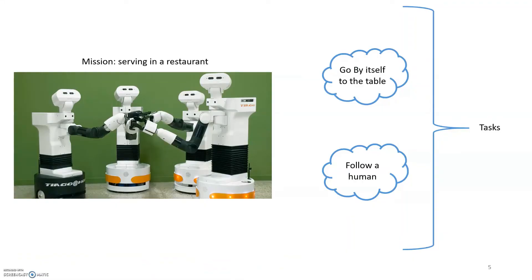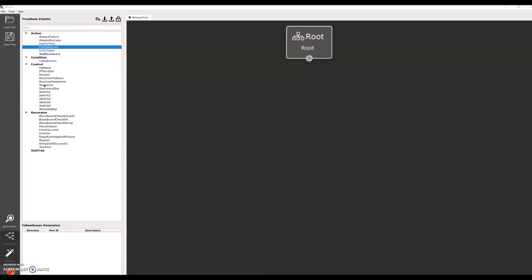To understand some behavior tree concepts, let's try to build the coordination part between the tasks forming Tiago's mission of delivering an order using a behavior tree. As I mentioned before, Tiago can either deliver the order by itself or follow a human to the table, depending on whether it knows the table location. Behavior trees offer different control flow node types.